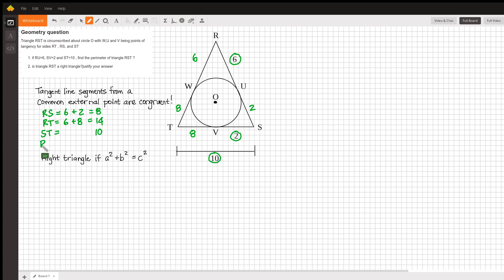And we'd already been told that the distance from S to T was equal to 10. That lets us easily find the perimeter of the triangle, which is found by just adding together the three sides that we have for a total perimeter of 32. That answers the first question in this problem.